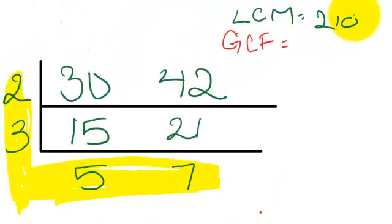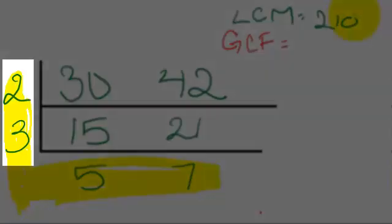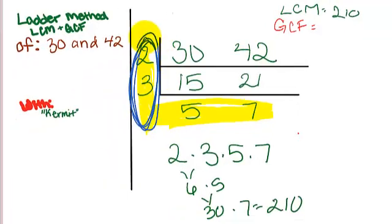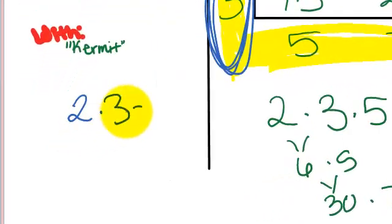Now we're going to look in this column. And we're going to see that there's only a 2 and a 3. Only use this column. Do not use 5 and 7 because those are on the bottom and then it would mess up your whole idea for finding the GCF. So we're going to do 2 times 3 equals 6. So our GCF is 6.